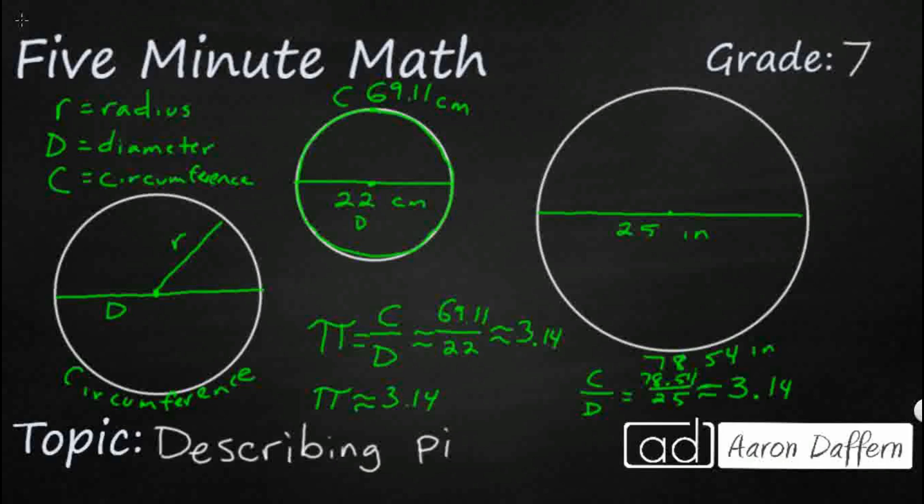So it doesn't matter how big or how small, as long as it is a pure circle. That means each point in the circle is equidistant from the center, right? It's not an oval or anything. The circumference over the diameter will equal this constant that we call pi.